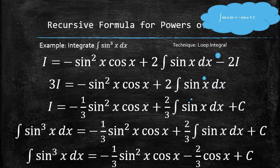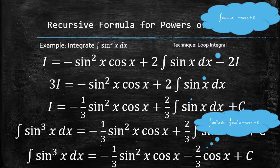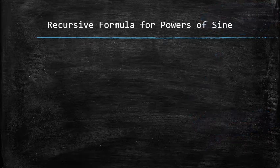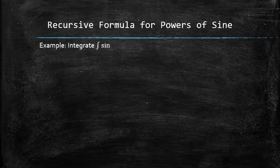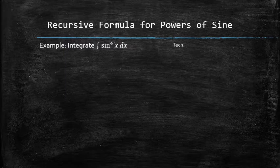Note that trig identities can be used to show that this result differs from the previous one only by a constant. Let's integrate the sine raised to the power of 4 using the same technique that leads to a loop integral.